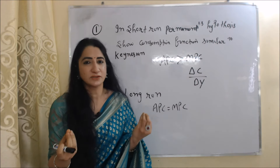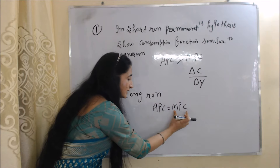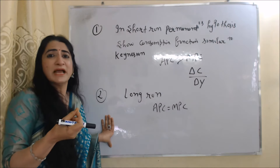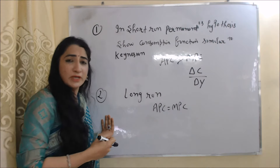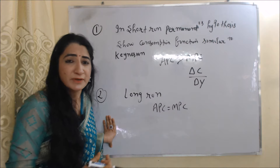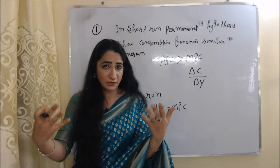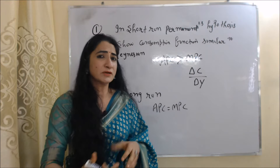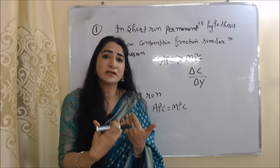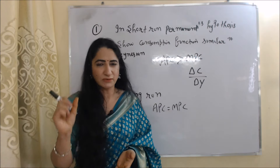On the other hand, during a long time period, MPC increases and becomes equal to APC. Why? Because in the long run, I feel very secure — I have been earning for many years, I have experience and a particular skill. I am sure that wherever I work, I can earn this particular amount. That is why I will consume more, and as a result my MPC will increase and become equal to APC.